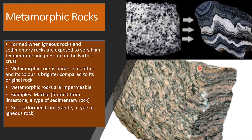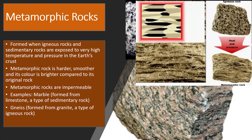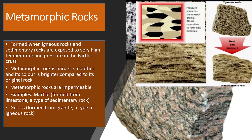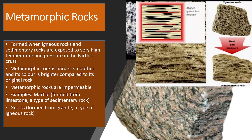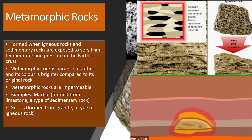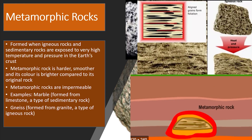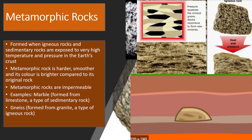Another type of rock is metamorphic rock. Metamorphic rock is formed when igneous rock and sedimentary rock are exposed to very high temperature and pressure in the Earth's crust. Metamorphic rock is harder, smoother and its colour is brighter compared to its original rock. Metamorphic rock is impermeable, meaning it does not allow fluid to pass through.